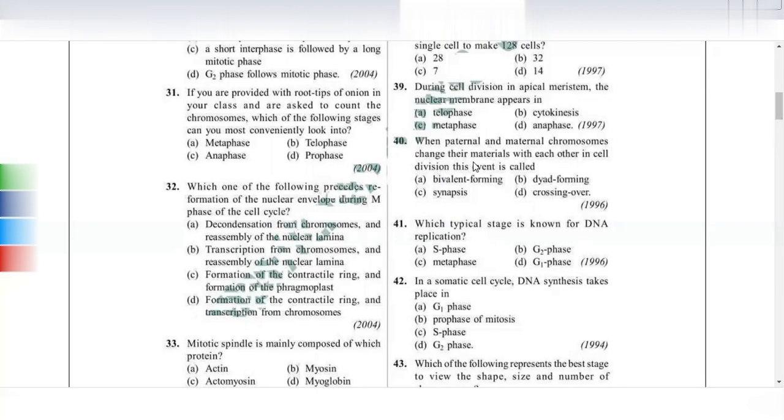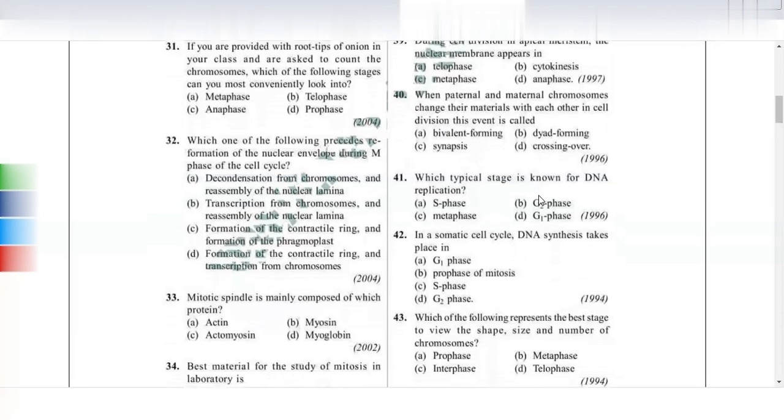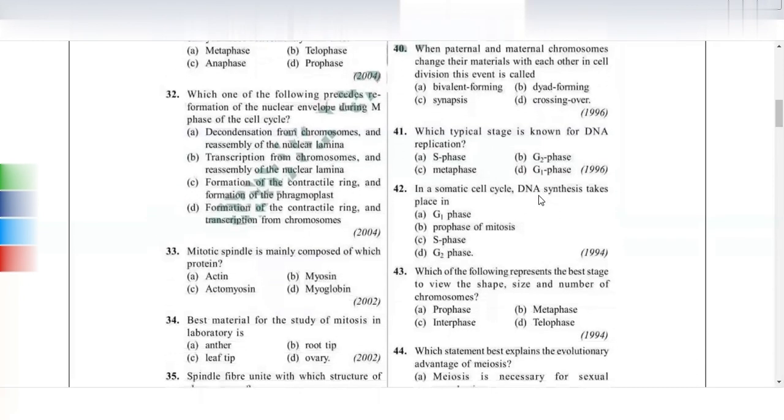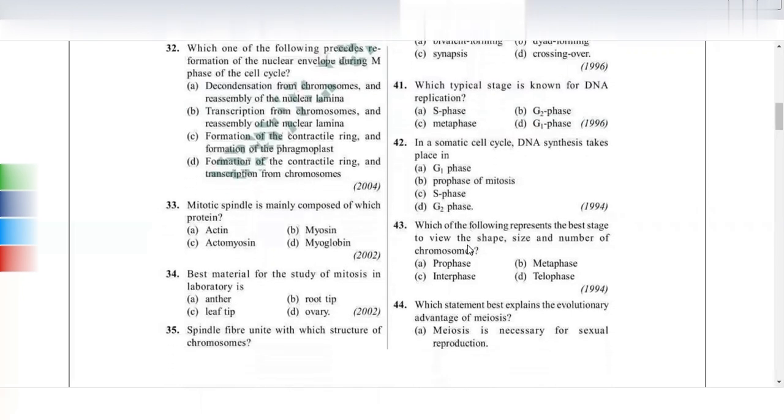When paternal and maternal chromosomes exchange their materials with each other in cell division, this event is called crossing over. Crossing over occurs in pachytene. Which stage is known as DNA replication? S phase. In somatic cell cycle, DNA synthesis takes place in S phase. Replication and synthesis both happen in S phase. Which represents the best stage to observe size, shape, and number of chromosomes? Metaphase.